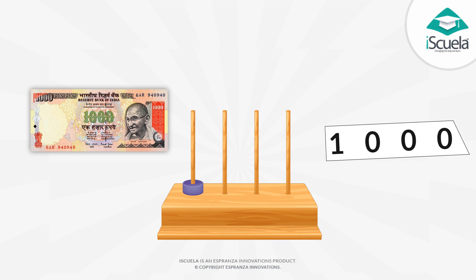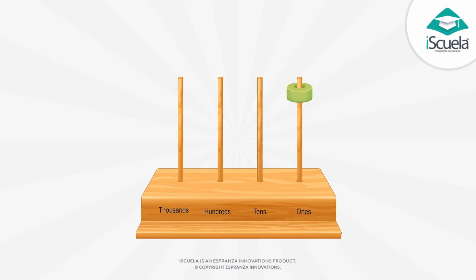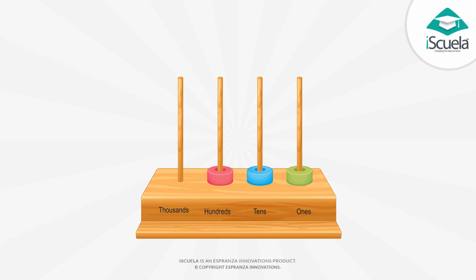Now let us learn this in an easy way. For the ones place, there is 1 digit. For the tens place, there are 2 digits. For the hundreds place, there are 3 digits. For the thousands place, we need 4 digits. Let us think and write some more.